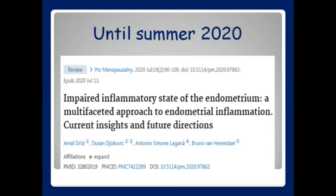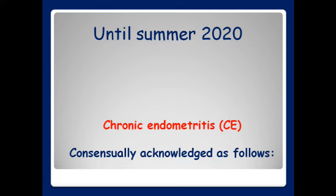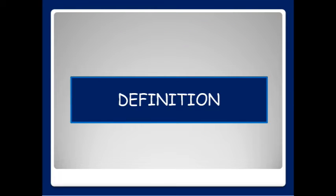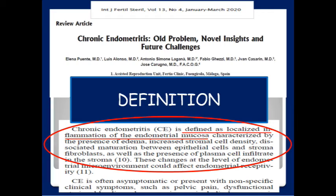Until summer 2020, the moment of publication of our paper 'Impaired Inflammatory State of the Endometrium: A Multifaceted Approach to Endometrial Inflammation,' there was only one entity referred to when dealing with chronic inflammation of the endometrium, termed chronic endometritis. In this complete review article published in Fertility and Sterility by the beginning of 2020, we can read about chronic endometritis defined as localized inflammation in the endometrial mucosa.